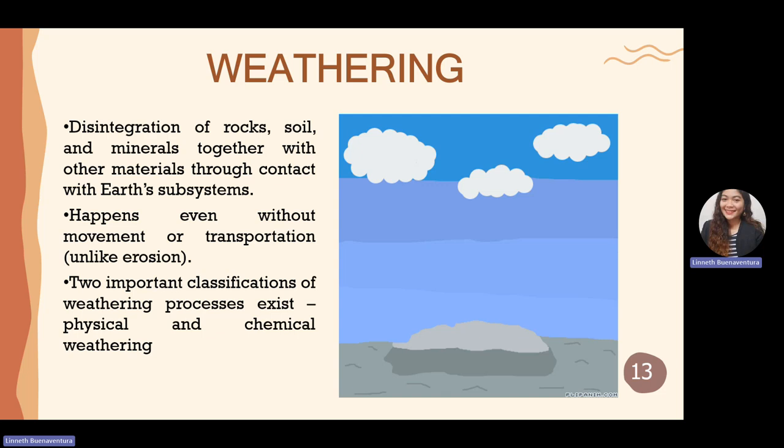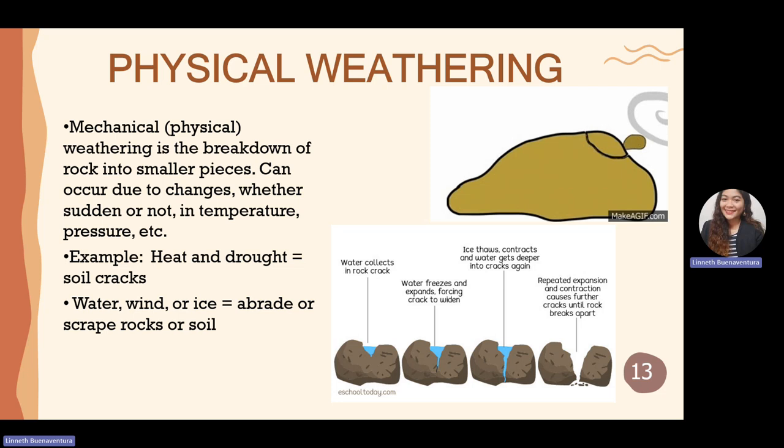Two important classifications of weathering exist: physical and chemical weathering. Physical weathering, also called mechanical weathering, is the breakage of rocks into smaller pieces. It can occur due to sudden or gradual changes in temperature and pressure. For example, heat and drought can cause the soil to crack — that is weathering.